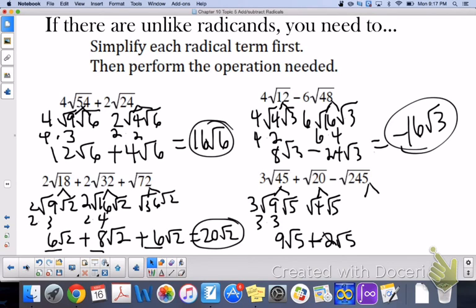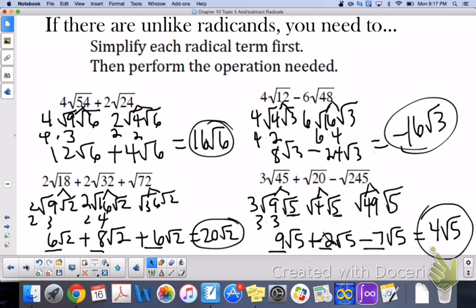And then this is 245, a tough one. So if you're not sure, think, well they were both 5. So do 245 divided by 5. That's 49. Yep, 49 is a perfect square. 49 times 5. Square root of 49 is 7. So we have 9 plus 2 is 11. 11 minus 7 is 4. So we have 4 root 5.